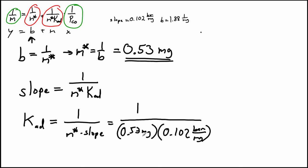So we can see that our units of milligrams are going to cancel. And we're going to have reciprocal bar as our unit here. And so that comes out to 18.5 reciprocal bar.